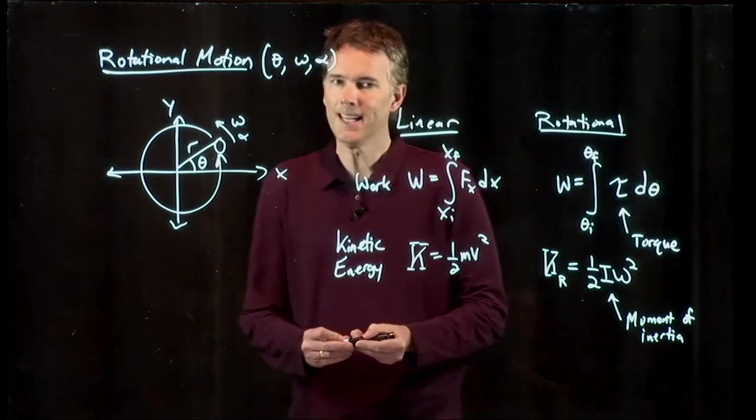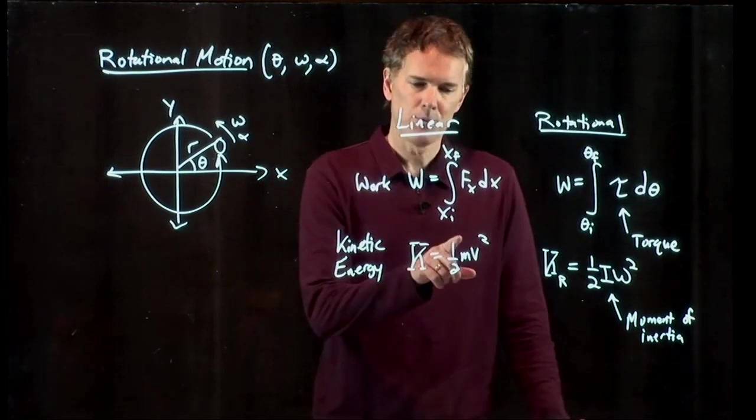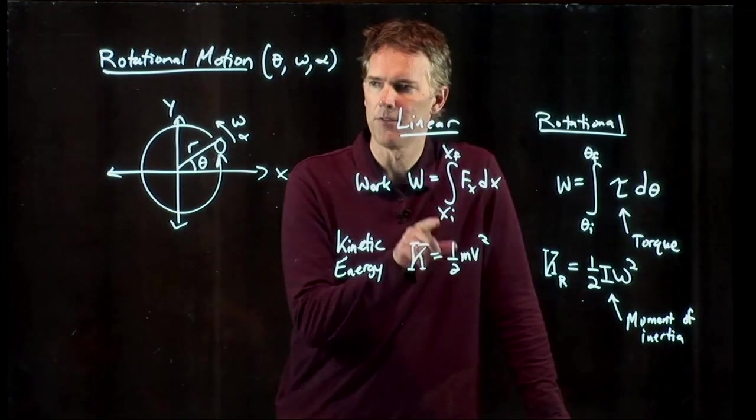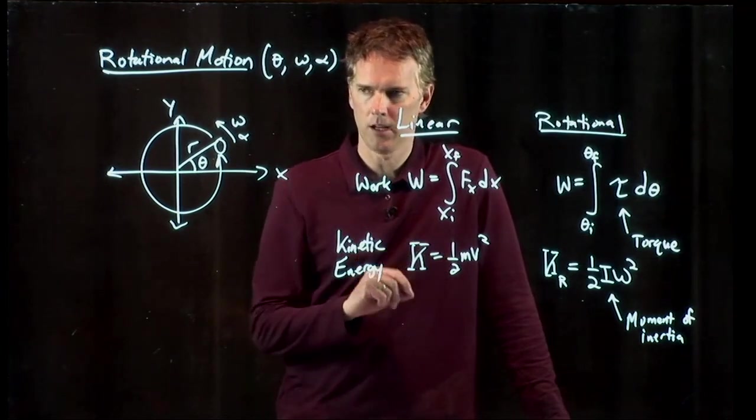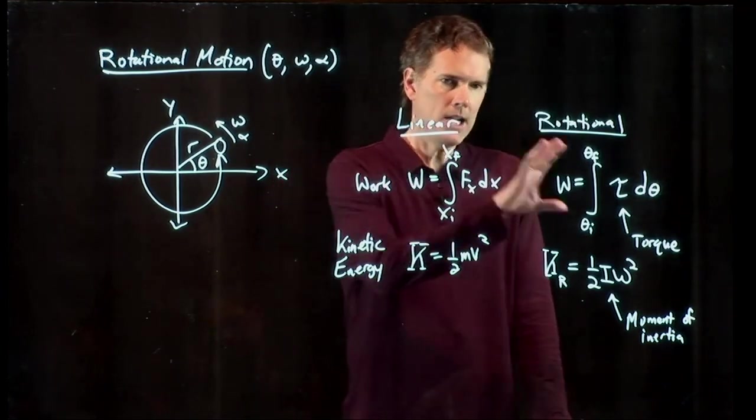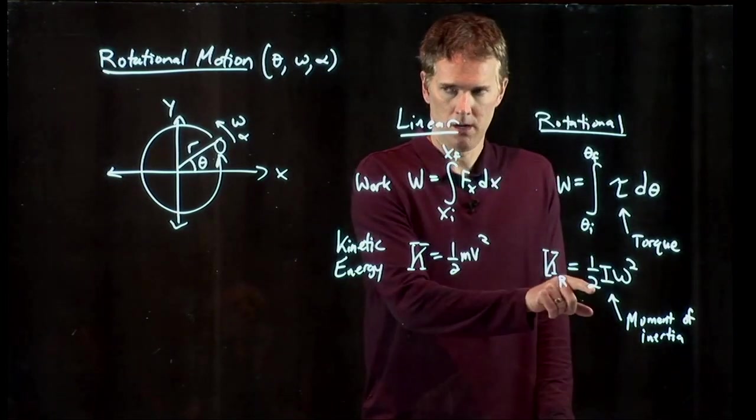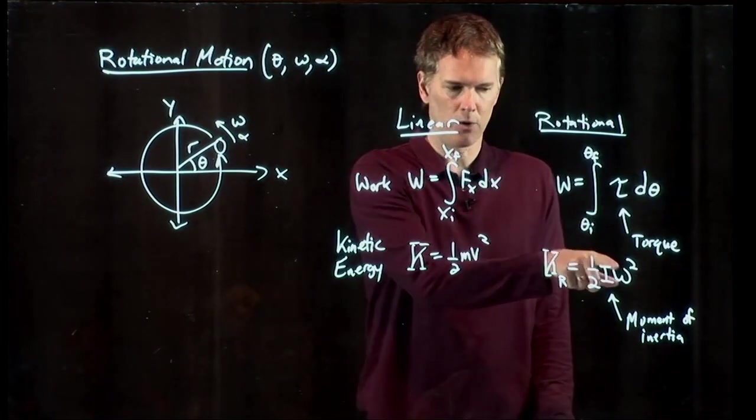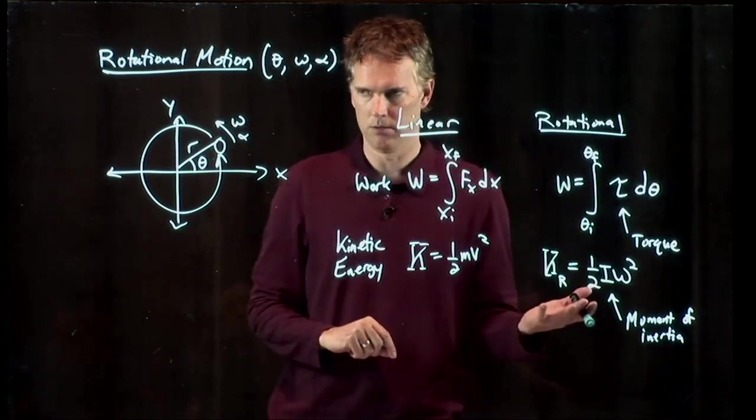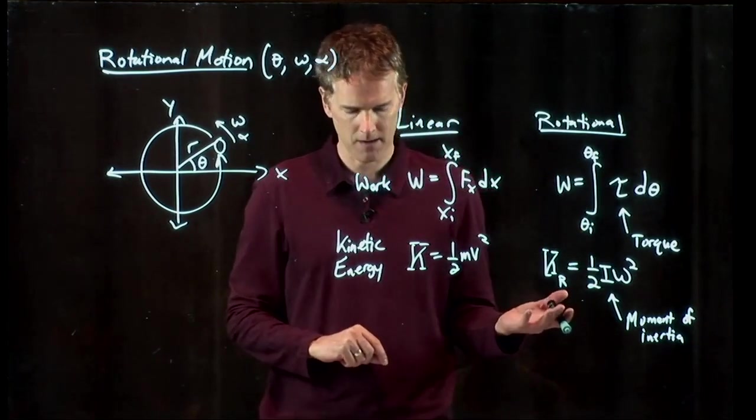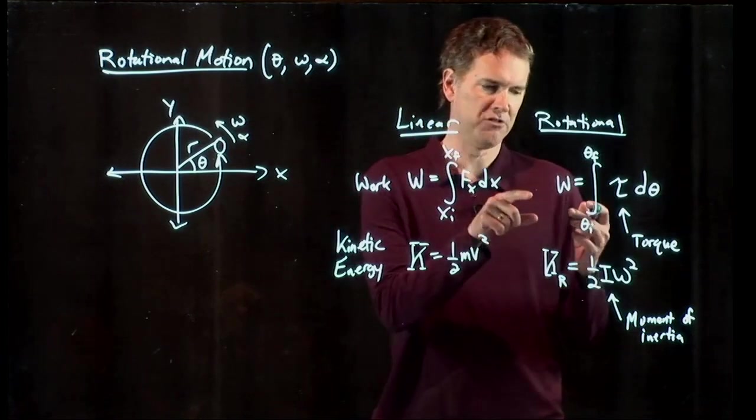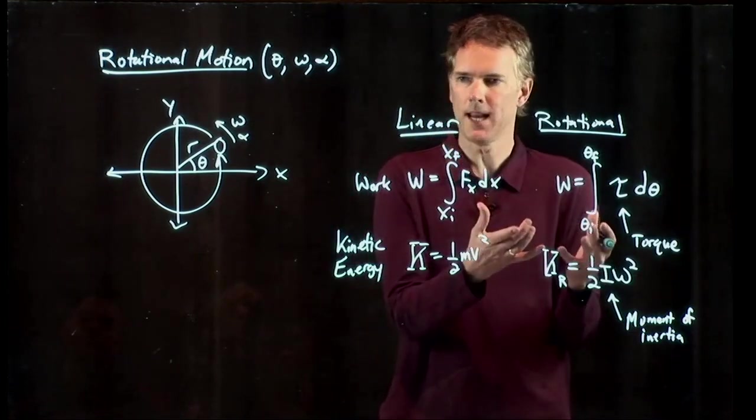So in the linear case, objects have mass. And if they're moving at speed v, then they have kinetic energy. In the rotational case, objects have moments of inertia. And if they are rotating at omega, then they have rotational kinetic energy. And so you can actually store a lot of energy in rotating things.